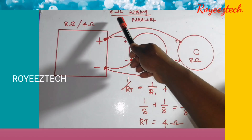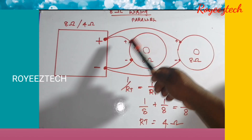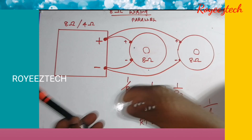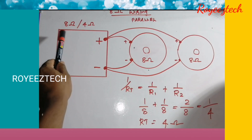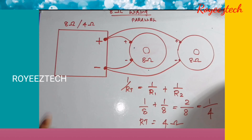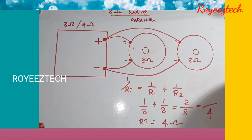Now we have 8-ohm speakers in a parallel wiring configuration. Two 8-ohm speakers are connected in parallel. This is the amplifier output impedance we need to calculate — the total impedance of the parallel connection.